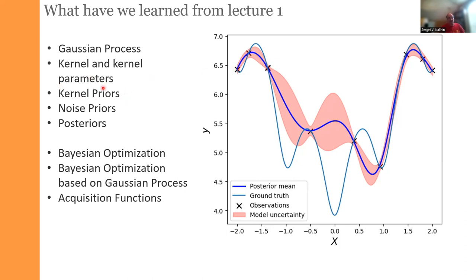We looked at kernel priors and noise priors. This choice is usually overlooked in the classical Gaussian processing literature. Practically, if you're a physicist, this is the first thing you need to pay attention to, because the priors — both for kernel and noise — have a very well-defined physical meaning. For example, the noise prior is our belief in our measurement system, and the kernel prior is our belief in how strong the correlations are in the parameter space.